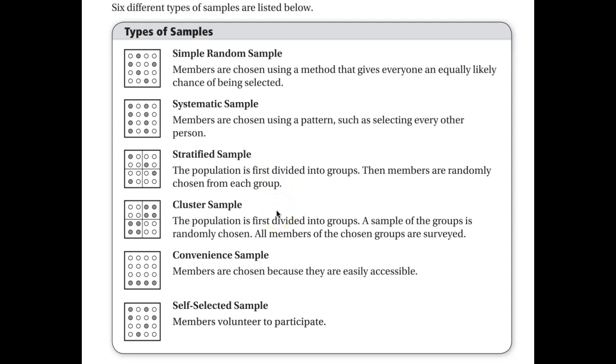That's different from a cluster sample because I would still divide my population into groups, but then I would sample all or some of the members from only a few groups. So if I divided my trees into 10 groups and then randomly selected from four of those 10 groups, that would be a cluster sample.